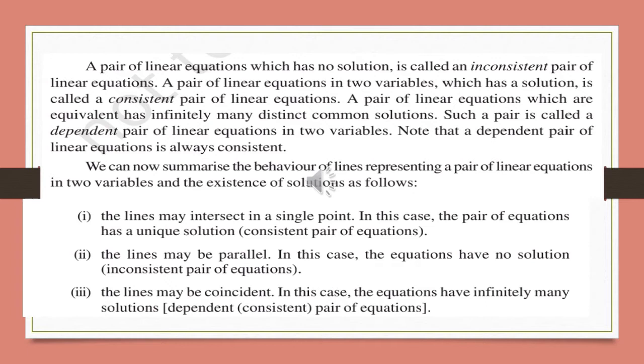We can now summarize the behavior of lines representing a pair of linear equations in two variables and the existence of solutions. First condition: the lines may intersect in a single point. This is the case of intersecting lines, and in this case the pair of equations has a unique solution — meaning only one solution. This type of equations are called a consistent pair of equations.